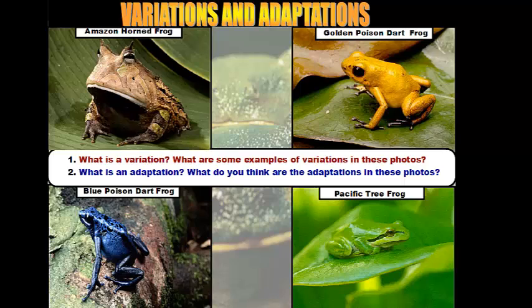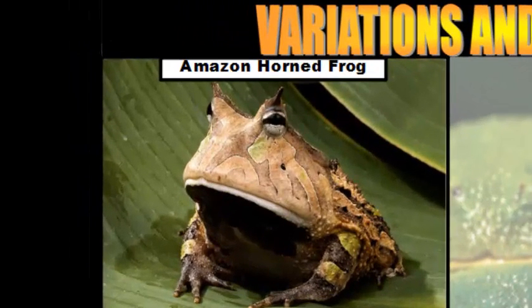Lastly, eye positioning. Eye positioning is important because it depends on the function of the eyes. The Amazon horned frog is an ambush predator — it hides, stays still, and when something comes across its path, it jumps out, springs on it, and swallows it in that big mouth.